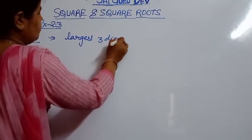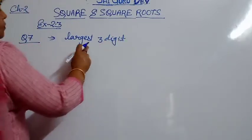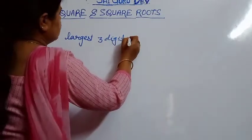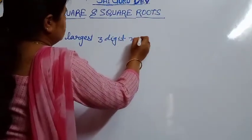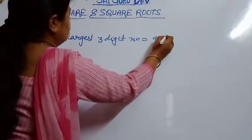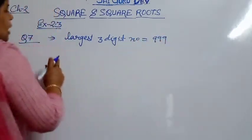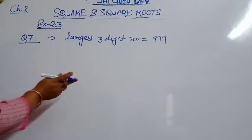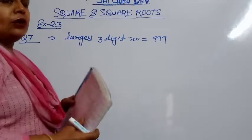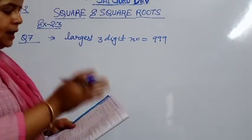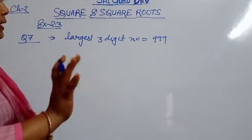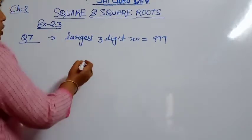Everybody already knows what the largest 3-digit number is — that is 999. Now, 999 is not a perfect square. We have to find the largest 3-digit number which will be a perfect square.